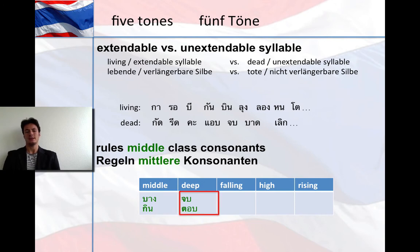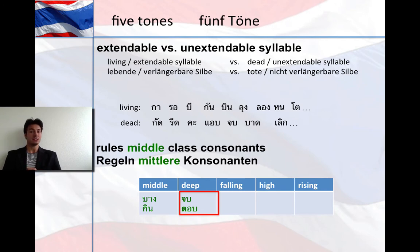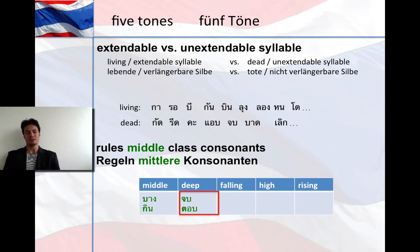In the deep tone section we have DO and DAW. These tones are deep because there is a middle class consonant at the initial position. It doesn't matter whether the vowel is long or short — what matters is that it's a dead syllable, because the final sound cannot be extended. Middle class consonant in a dead syllable results in a deep tone.